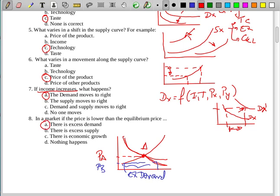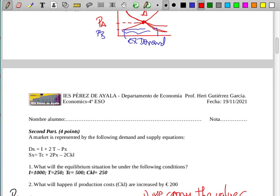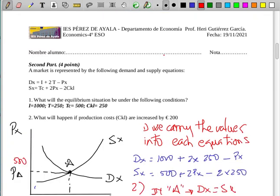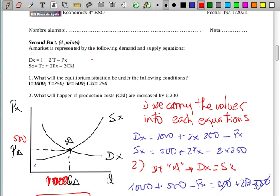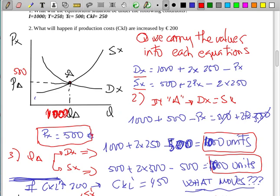This is the final of the test. And second part is an exercise about equilibrium market. When we have an equilibrium situation, exercise about equilibrium market. First of all, we carry the demand and supply.